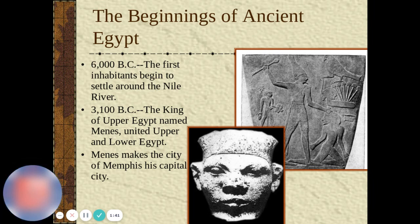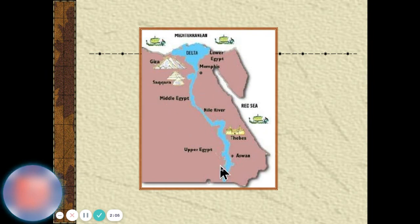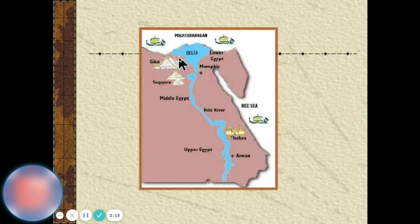In 3,100 BC, the king of Upper Egypt named Menes united Upper and Lower Egypt. Menes made the city of Memphis his capital city. The capital of Egypt now is Cairo. You can see where Memphis is — that's where Cairo is — and you can see the monuments and pyramids that have been there for thousands of years. This is the Nile River that flows through here.